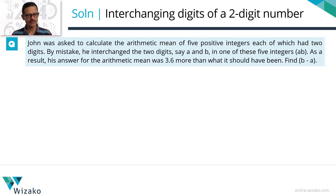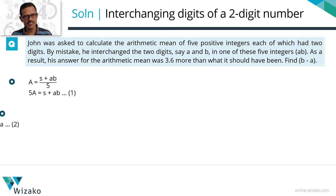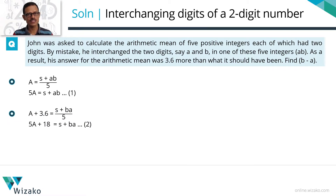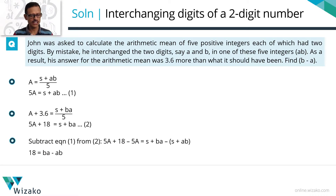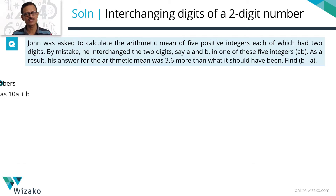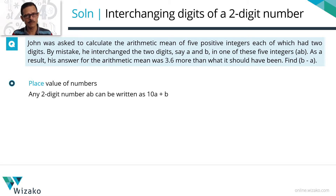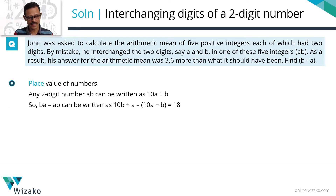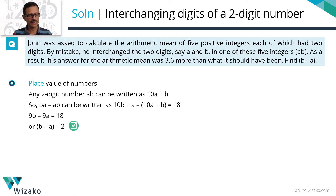To summarize the printed solution: Equation 1 is A = (S + AB)/5. Equation 2 is A + 3.6 = (S + BA)/5. Subtracting gives BA − AB = 18. Since any two-digit number AB = 10A + B, we get (10B + A) − (10A + B) = 9B − 9A = 18, so B − A = 2.